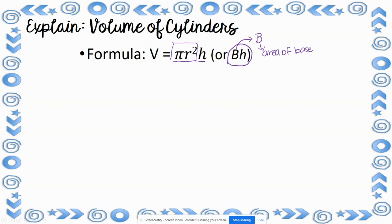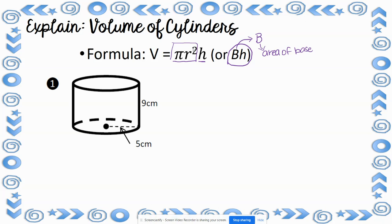Let's look at an example. In this problem, the height of the cylinder is 9 and the radius of the base is 5. We're going to use those in our formula: volume equals pi times radius squared times height, so pi times 5 squared times 9.